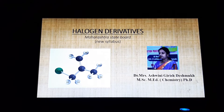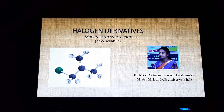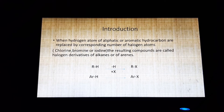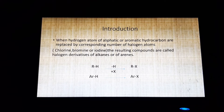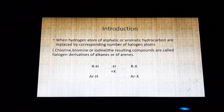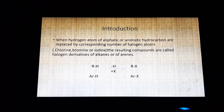Today we are going to study halogen derivatives — that is, compounds containing halogen atoms. When hydrogen atoms of aliphatic or aromatic hydrocarbons are replaced by a corresponding number of halogen atoms, the compounds formed are known as halogen derivatives of alkane or of arenes. The halogen atom may be Cl, Br, or I.